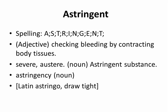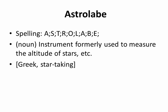Astringent. Spelling: A-S-T-R-I-N-G-E-N-T. Adjective. Checking bleeding by contracting body tissues. Severe; austere. Noun: astringent substance. Astringency (noun). From Latin 'astringo': draw tight.